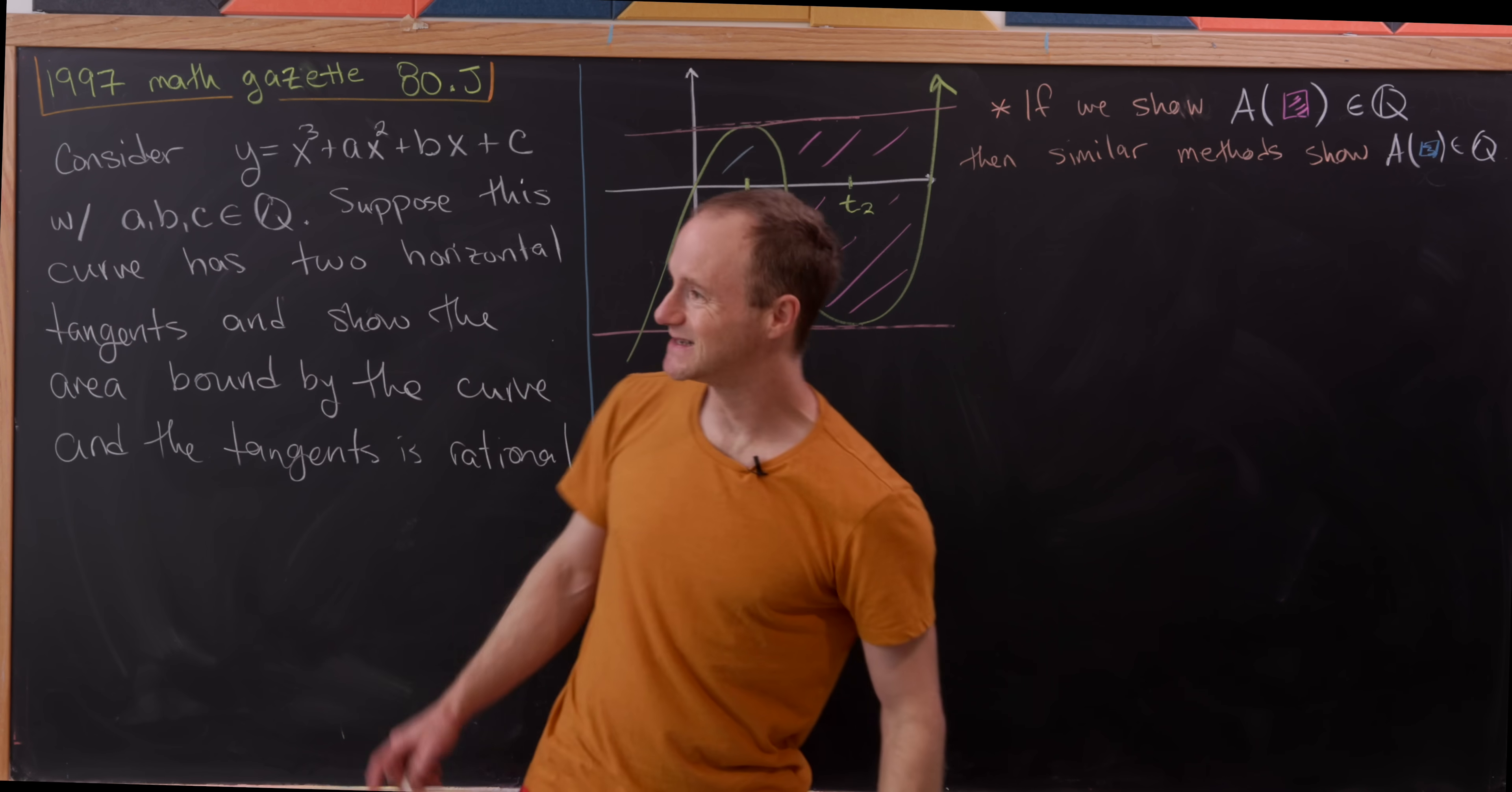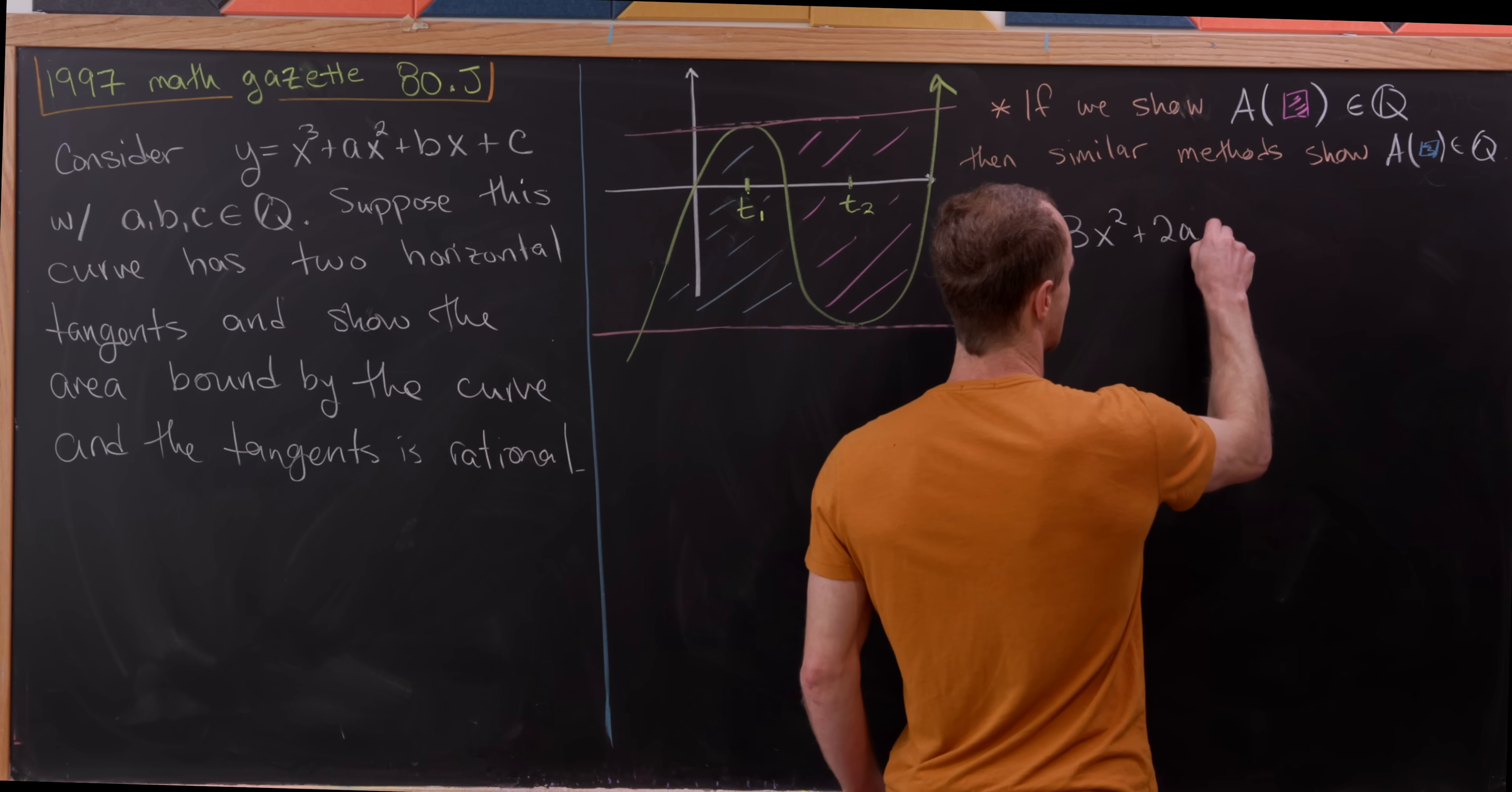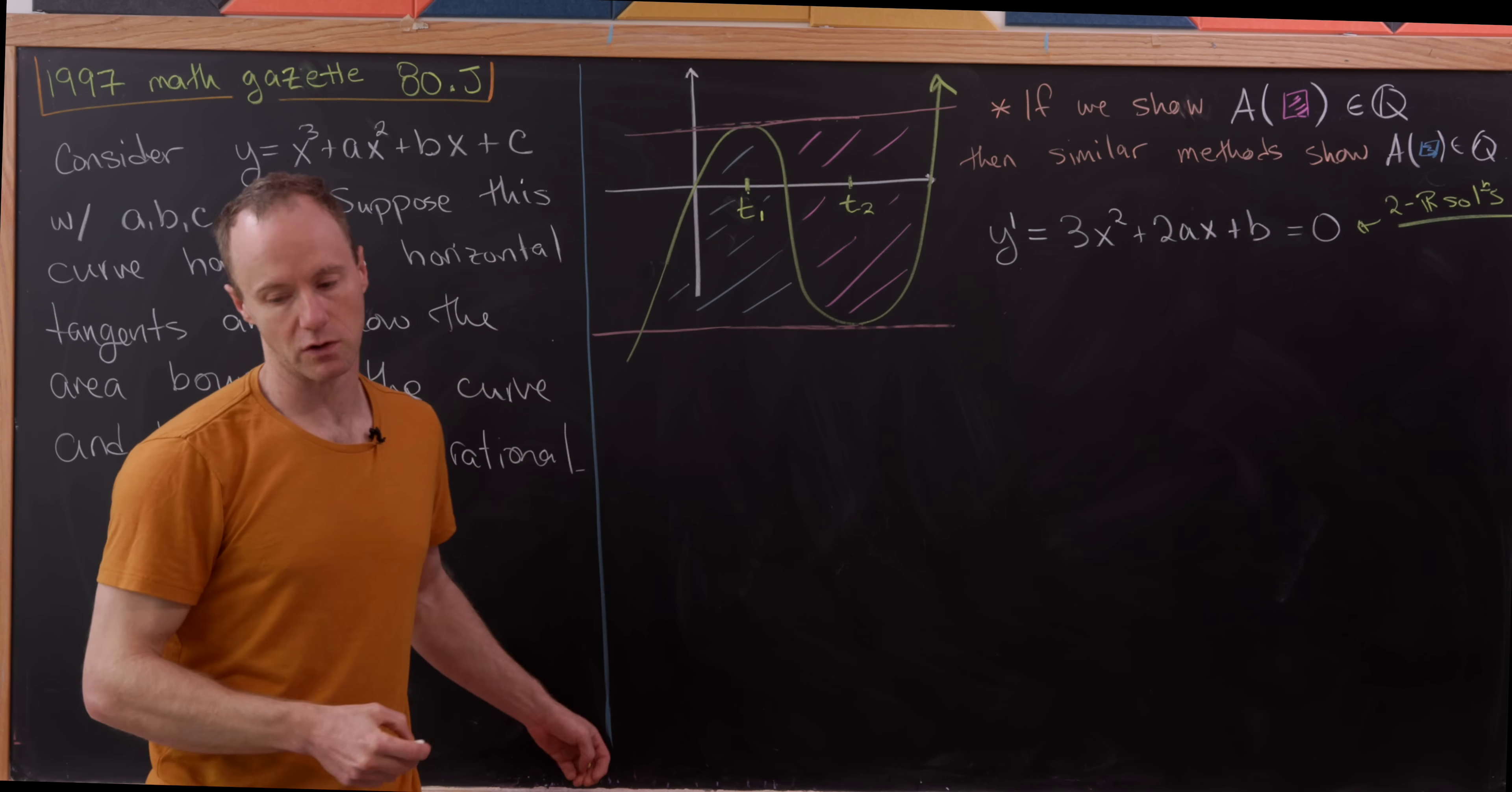So now let's dig in to what it means for these to have two horizontal tangents. Well, that means that if we take the derivative and set it equal to zero, we get two real solutions. So let's observe that the derivative here is 3x squared plus 2 times a times x plus b. And so we need to set this equal to zero, and we know this has two real solutions. And I really mean two unequal real solutions.